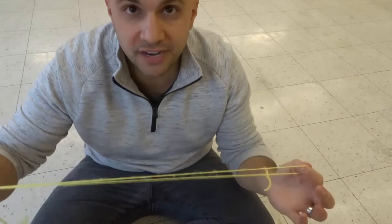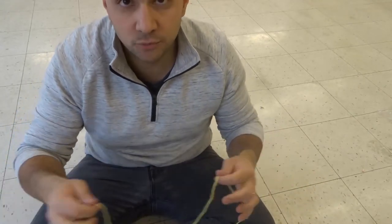I'm gonna be showing you how to do a string figure that represents either a witch's broom or a parachute depending on how you look at it.